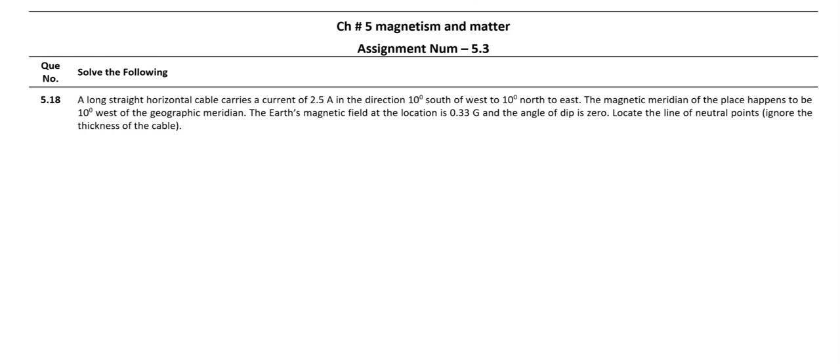Hello students. In this video we have problem 5.18, an additional exercise from the textbook. The question is: a long straight horizontal cable carries a current of 2.5 ampere in the direction 10 degrees south of west to 10 degrees north of east. The magnetic meridian of the place happens to be 10 degrees west of the geographic meridian. The Earth's magnetic field at the location is 0.33 Gauss and the angle of dip is zero.